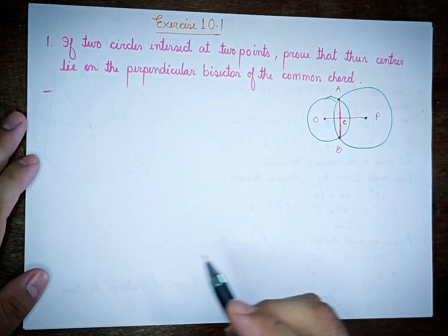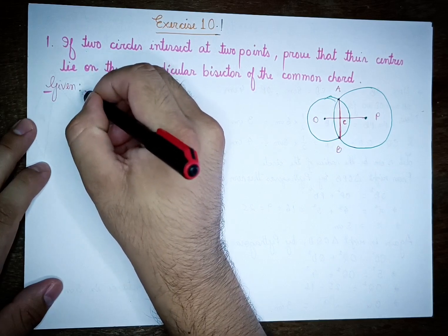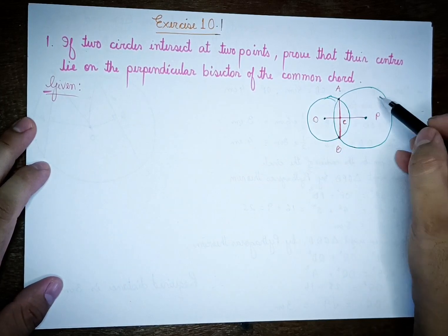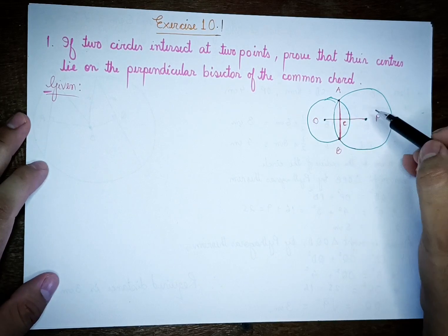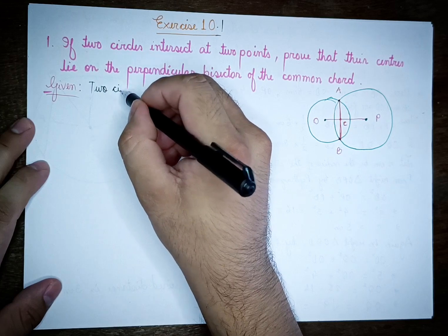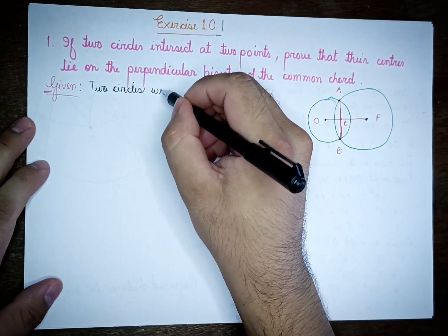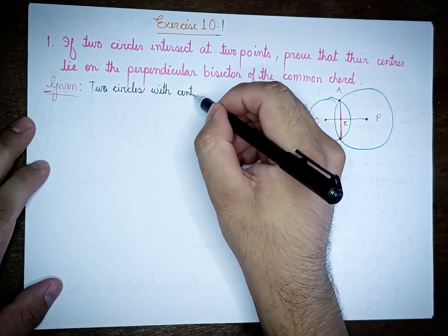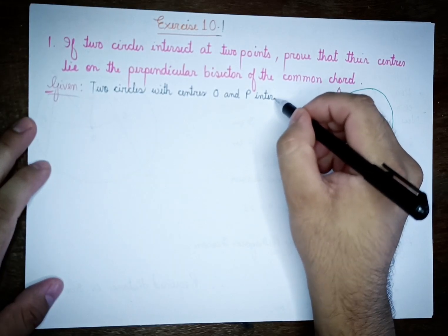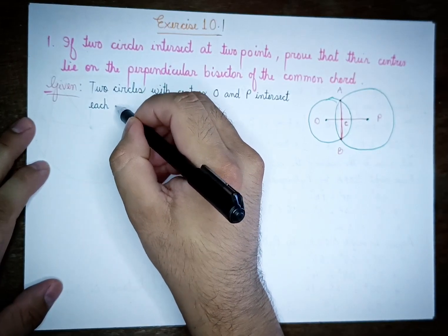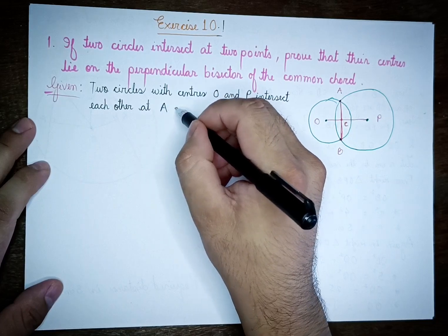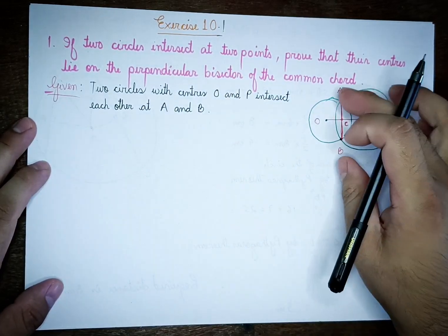This is given. This is the first step: the circle has a center, and the circles intersect at two points A and B. This is the second step: the circles intersect at two points A and B.